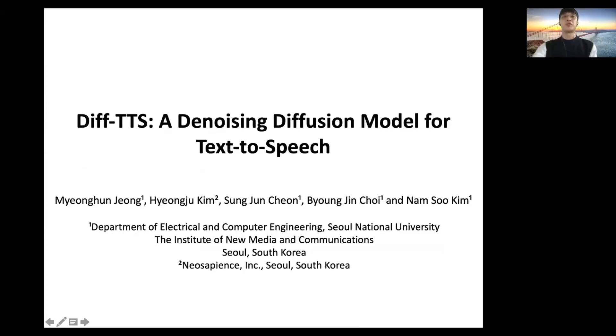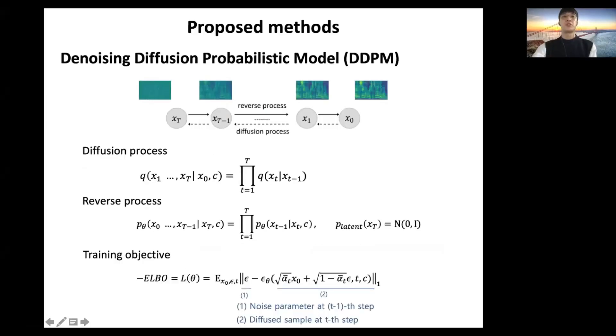Let me start the presentation. Diff-TTS utilizes a denoising diffusion generative model which has two different processes. The first one is the diffusion process. The mel spectrogram is gradually corrupted with Gaussian noise and transformed into latent variables.